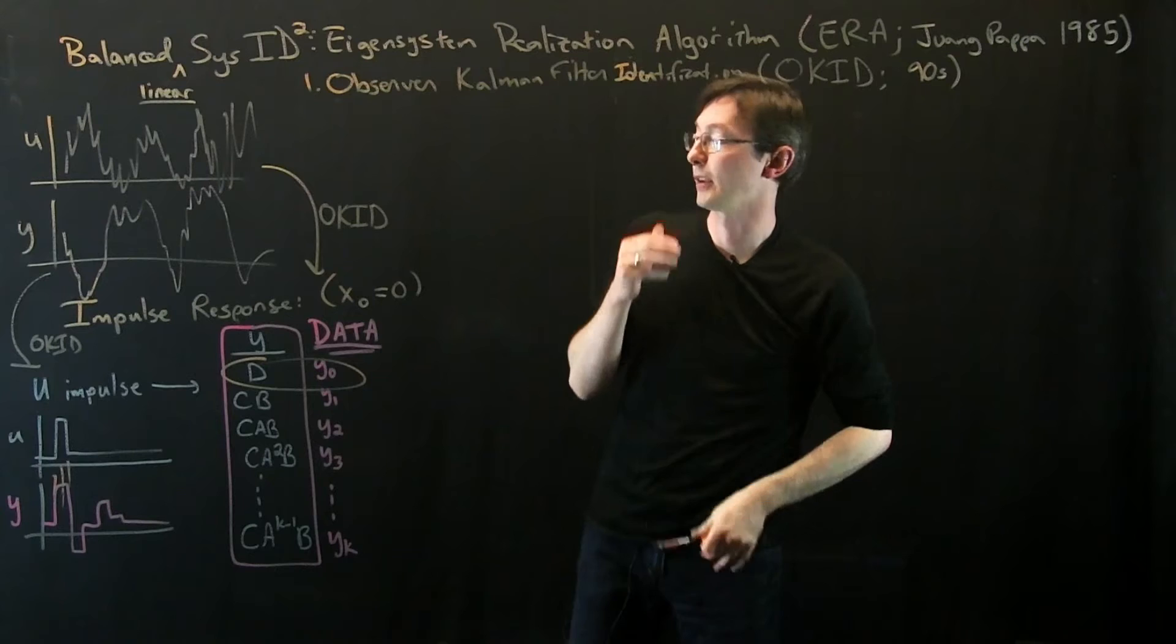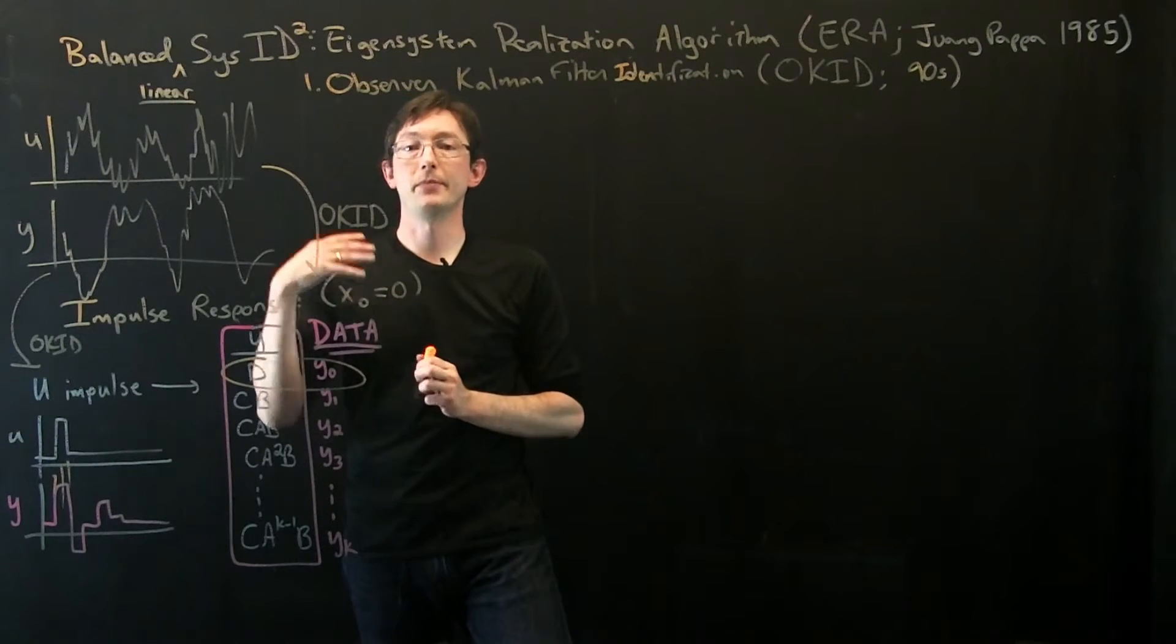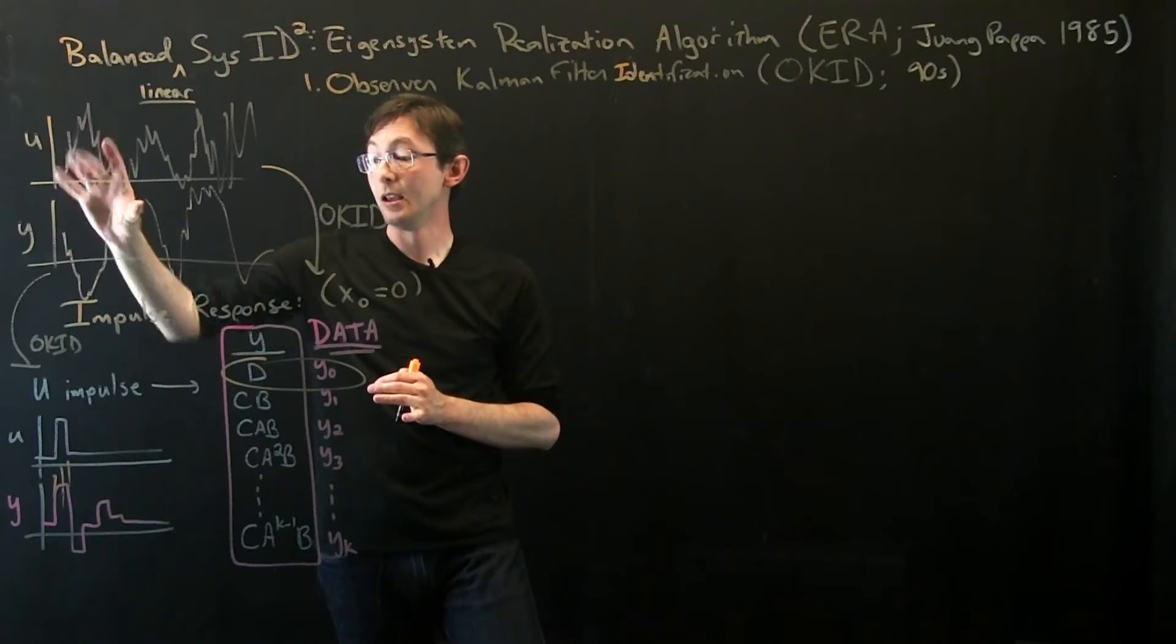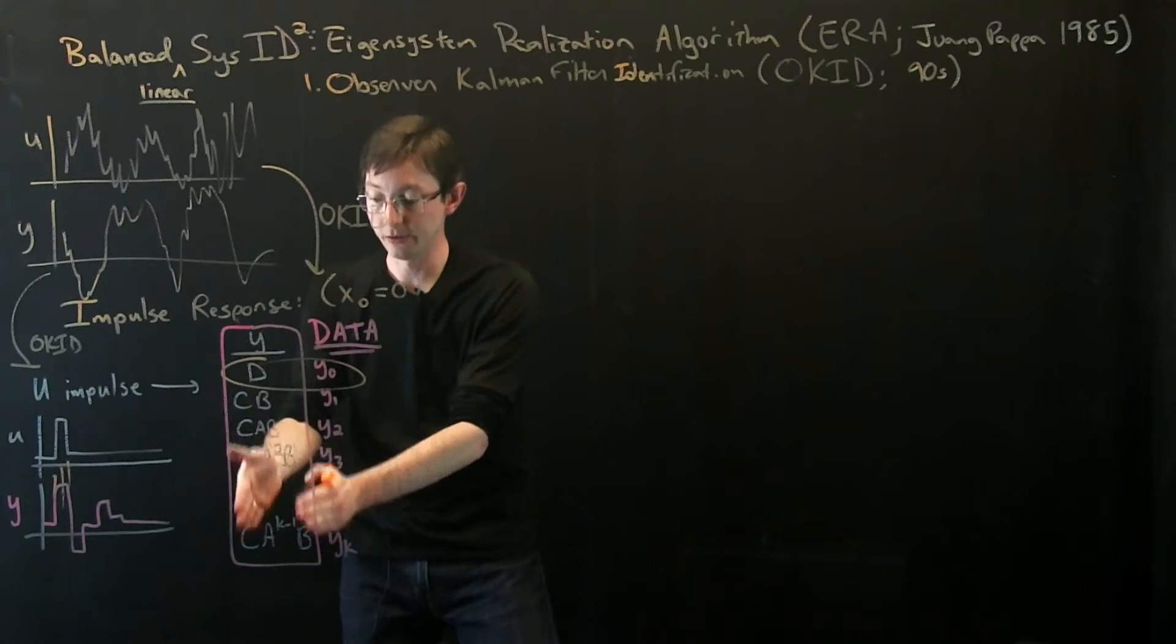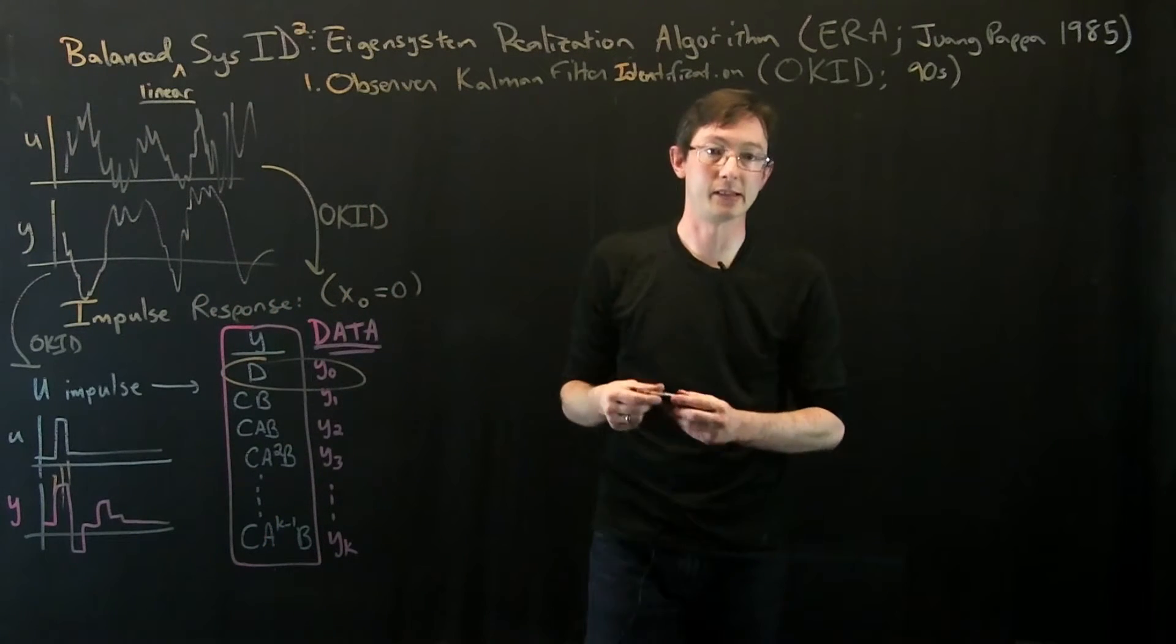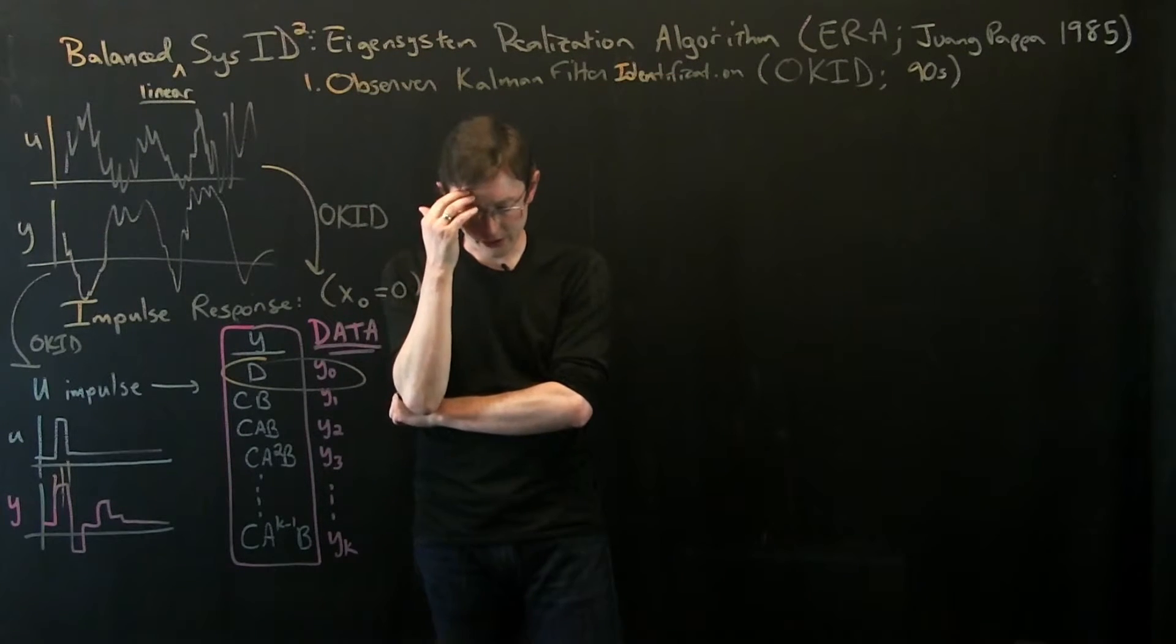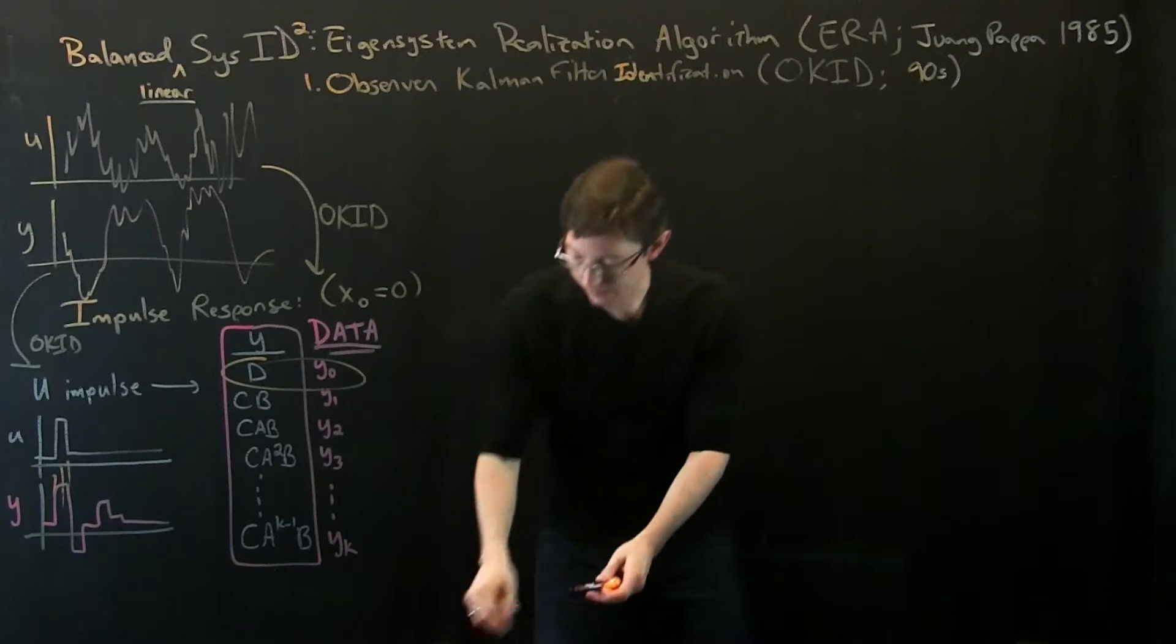I'm not going to show you how the entire OKID works. It is based on this idea that you can use a Kalman filter to estimate these matrices from this data, and then you can use these matrices with ERA to get a system model. That's how it was developed. I guess what I want to show you is roughly how the math would look.